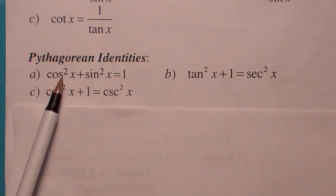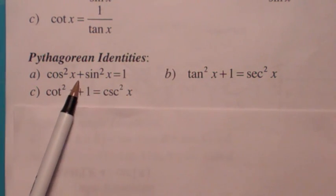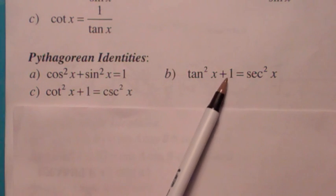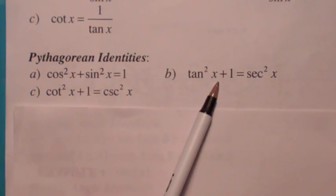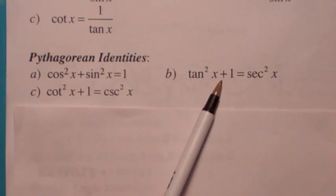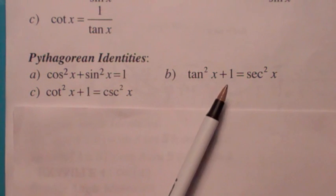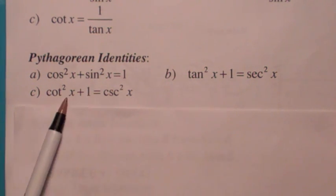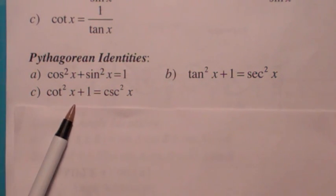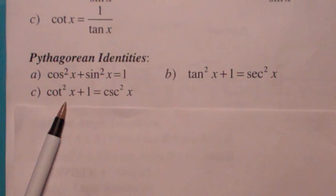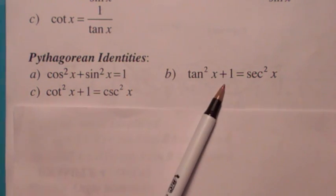Remember how to get the other two? If you take the first equation and divide both sides by sine squared, you get this one. And if you divide both sides by cosine squared, you get this one.